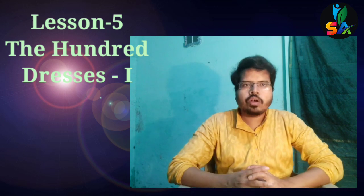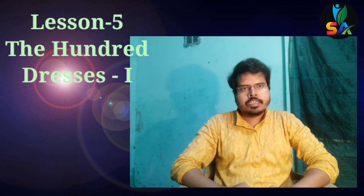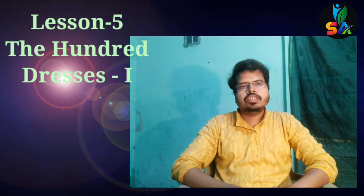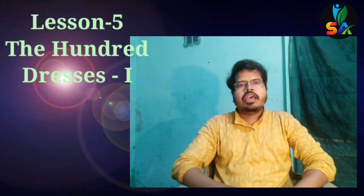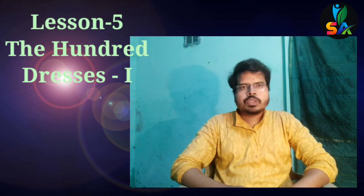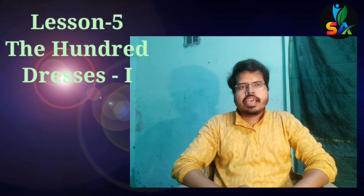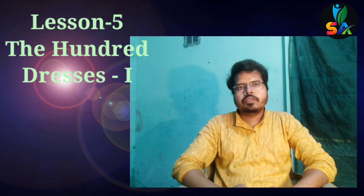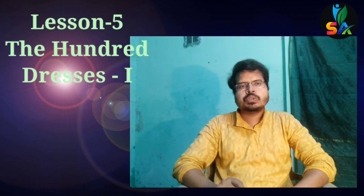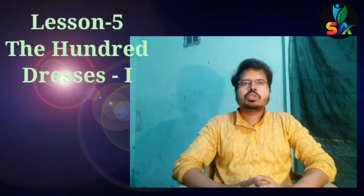The first and central character of the story is Wenda Petrasangi. Wenda Petrasangi was a poor girl who came from Boggins Heights, where poor people lived. She was very strange to the other students in the classroom because of her name — she was a Polish girl whose parents were migrants from Poland. When she came to school, she wore blue faded dresses every day, but she told her classmates that she had a hundred dresses.